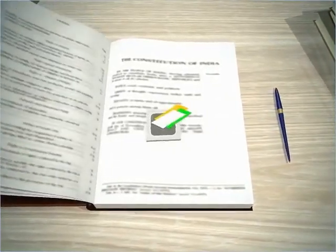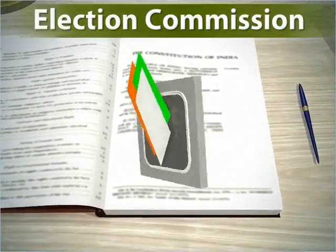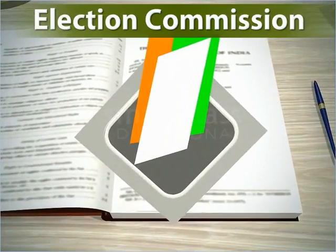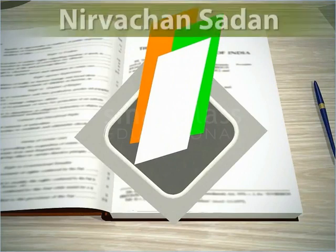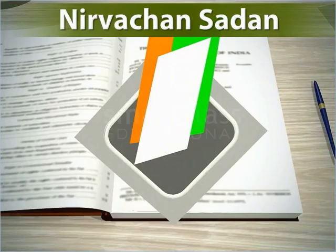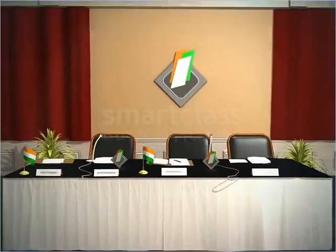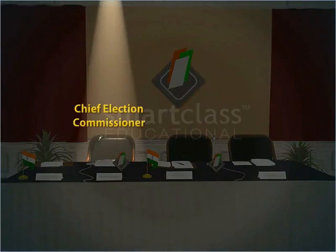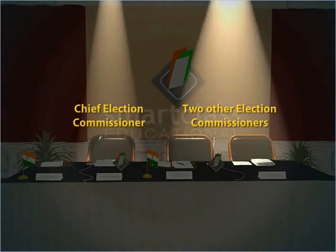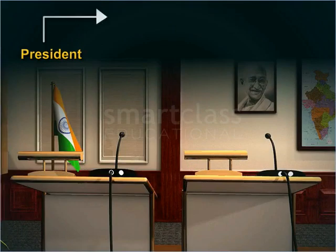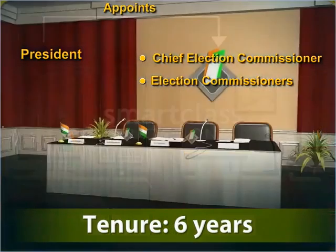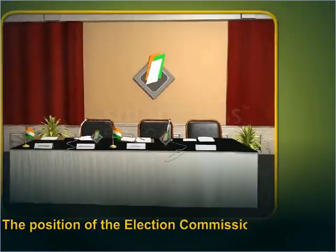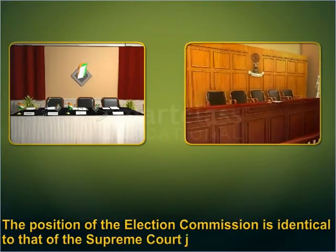The Constitution of India provides for an Election Commission to conduct free and fair elections in India. It is also known as Nirvachan Sadhan. The Election Commission of India consists of one Chief Election Commissioner and two other Election Commissioners. They are appointed by the President for a term of six years. The position of the Election Commission is identical to that of the Supreme Court judges.